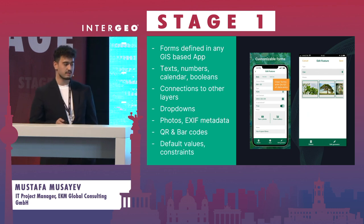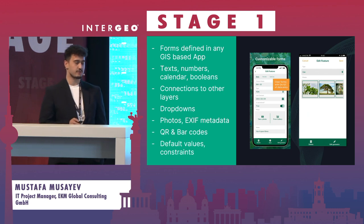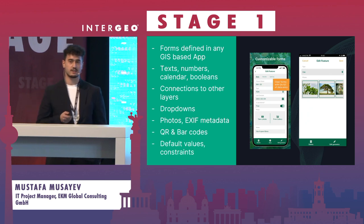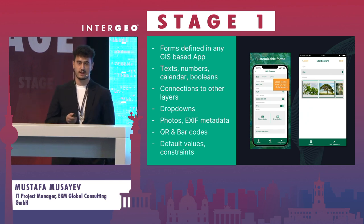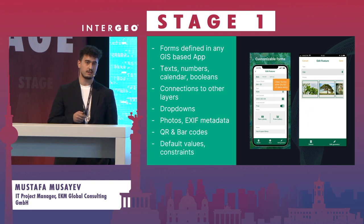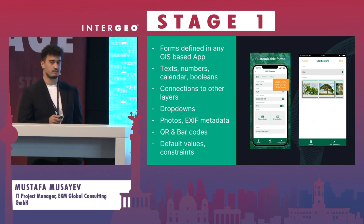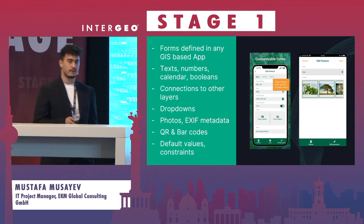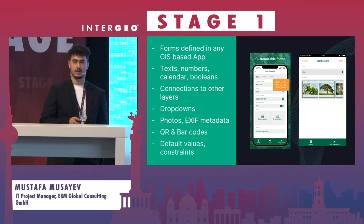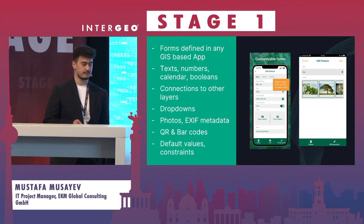You have drop-downs, photos, and QR barcodes. You can actually take a picture of every asset and synchronize it within the GIS map with a direct location on the x-y coordinate system — and that's why the base of the GIS map is very important to have the direct position of the asset.